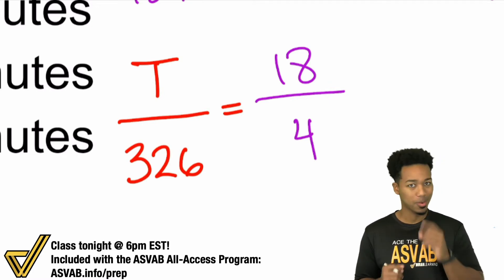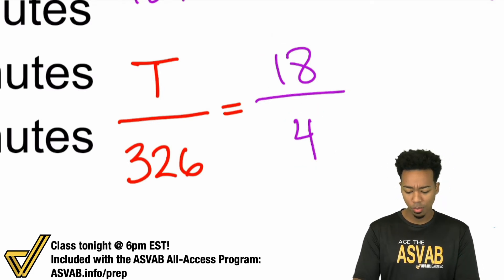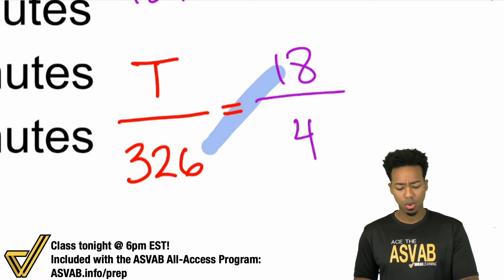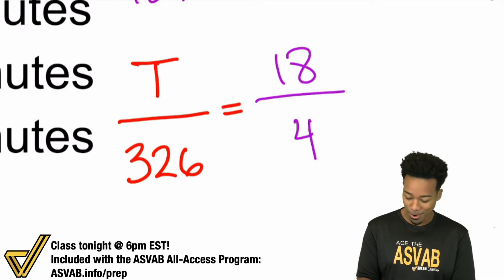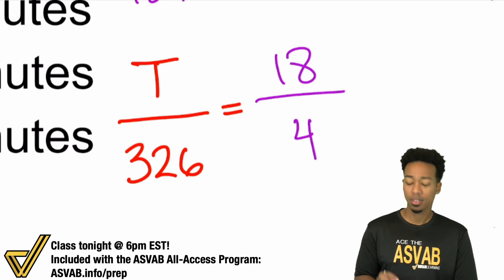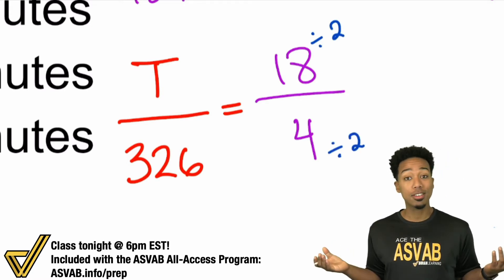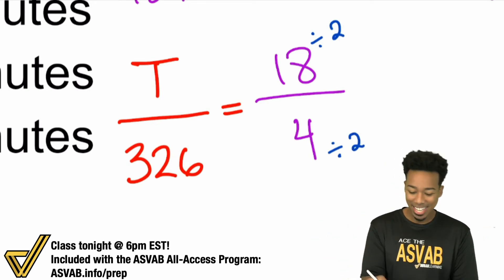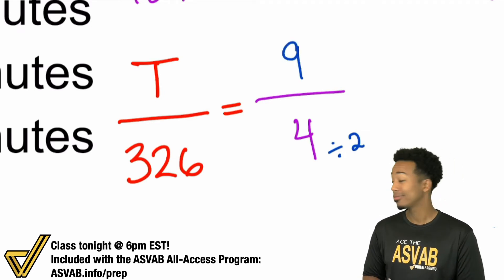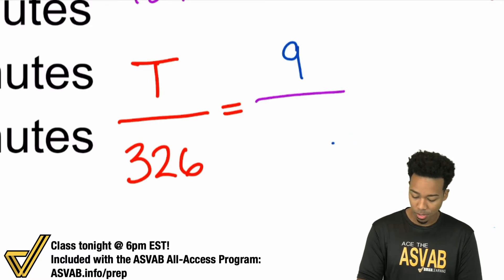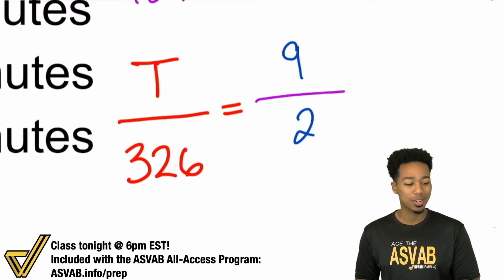Let's simplify the fraction 18 over 4. Would you rather multiply 18 and 326, or smaller numbers? Let's simplify first. 18 and 4 are both even, so they're both divisible by 2. 18 divided by 2 is 9, and 4 divided by 2 is 2. So 18 over 4 is the same as 9 over 2.